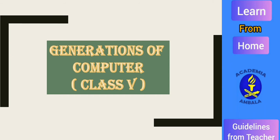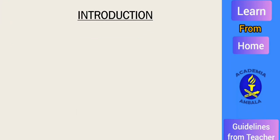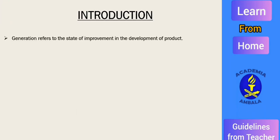Children, what does generation actually mean? Generation refers to the state of improvement in the development of a product. If we have developed any product and want to see how far it has changed from older to the newer one, this period of development is known as generation.